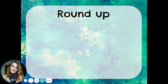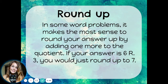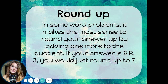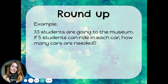Let's talk about the first choice. Sometimes you need to round up. In some word problems, it makes the most sense to round your answer up by adding one more to the quotient. If your answer is six remainder three, you would just round up and say that the answer is seven. For example,